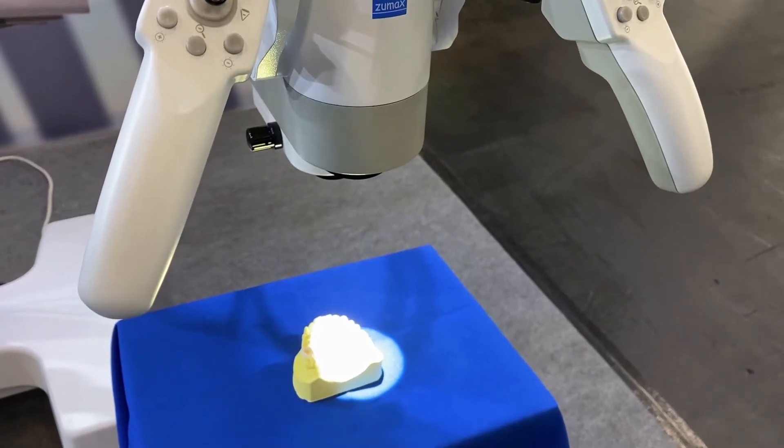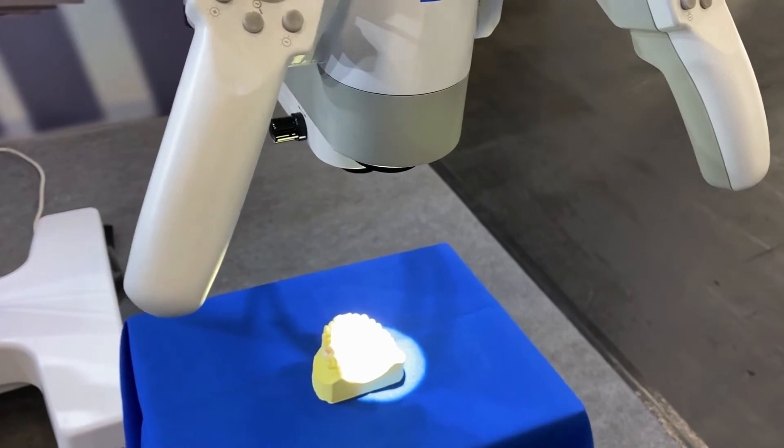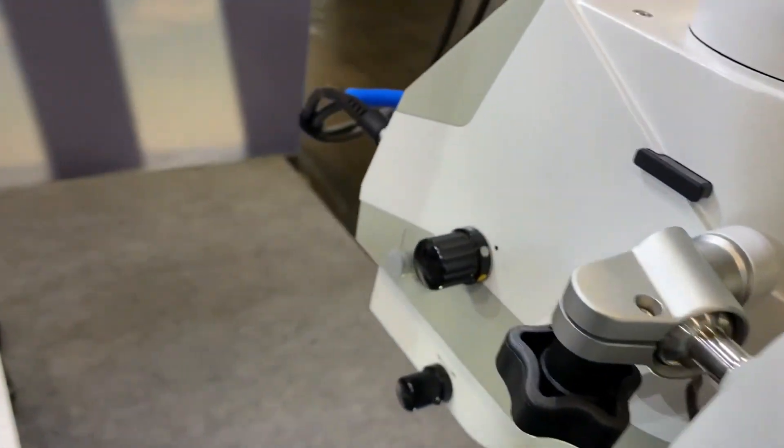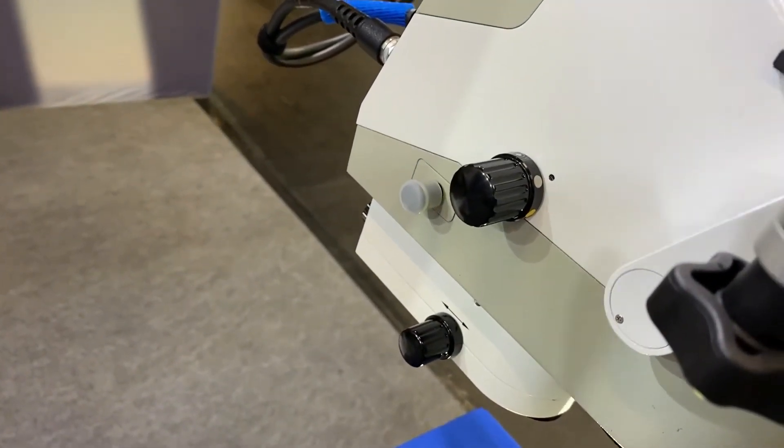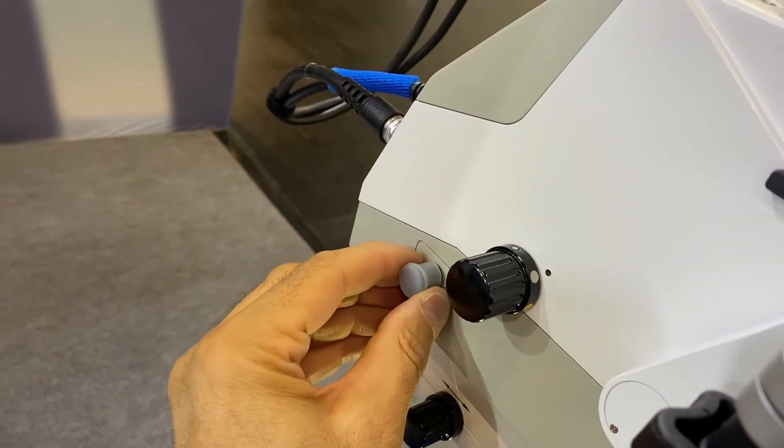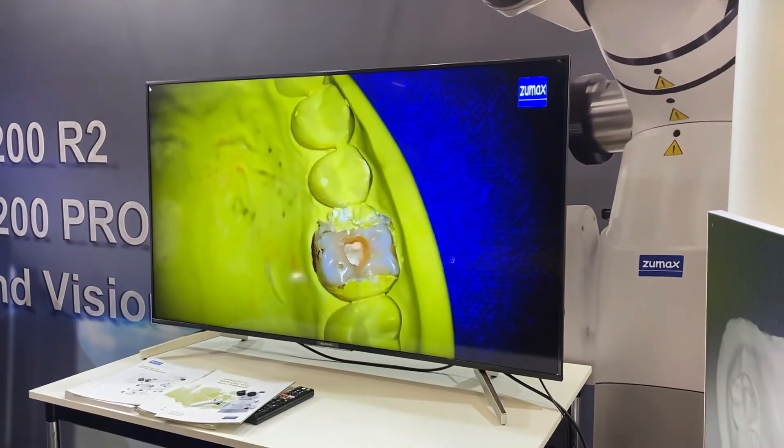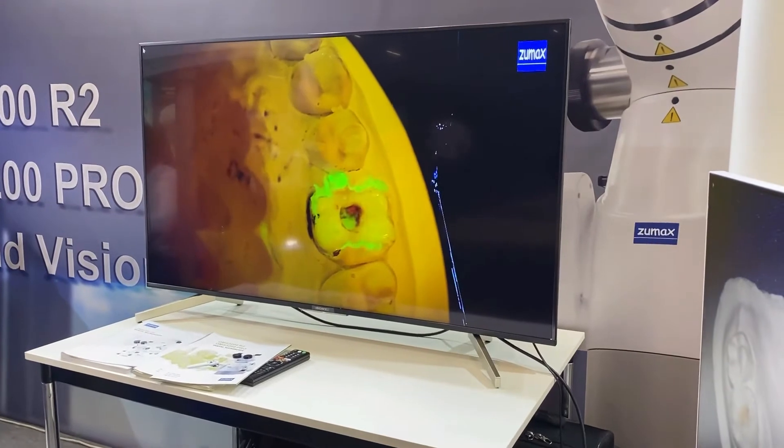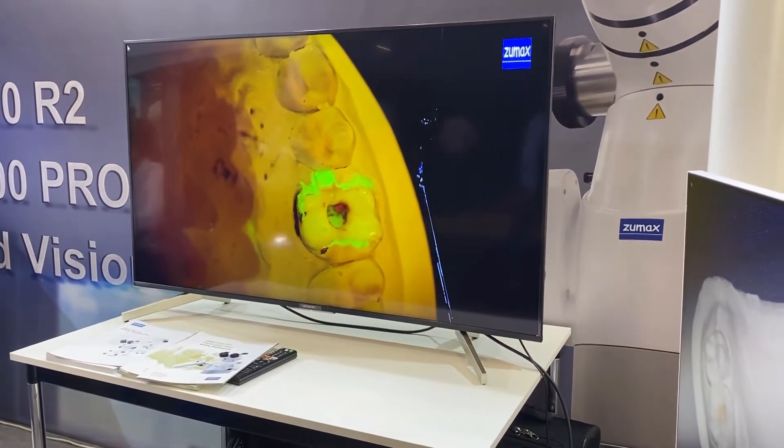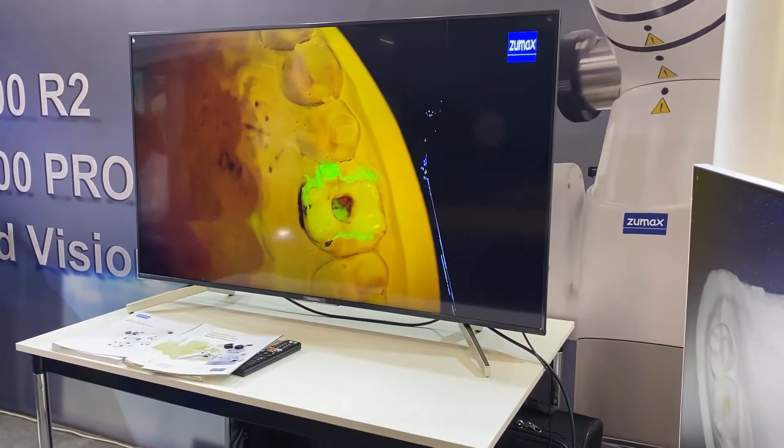This model comes with the optional fluorescent light for diagnostics. You will activate the light here on the side of the microscope with the switch here which I will pull out. Here is the screen. I pull out the switch and we activate the fluorescent light for better diagnostics of caries for example.